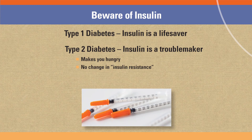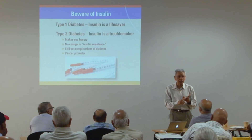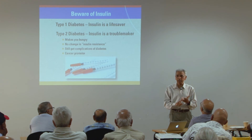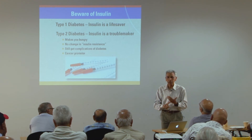Let us say you kept the sugar down, A1C below 7, religiously. Does that mean you can avoid complications of type 2 diabetes? You can still go blind. You can still have a heart attack. You can still lose your kidneys, your toes, your legs. So somebody please tell me what is the reason to prescribe insulin to a type 2 diabetic? I'm still trying to figure out the answer.